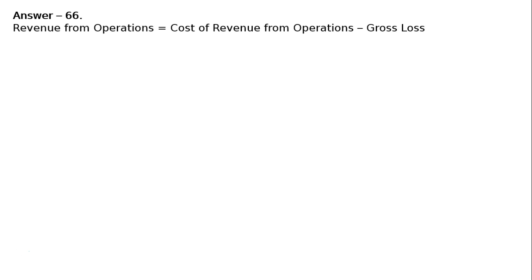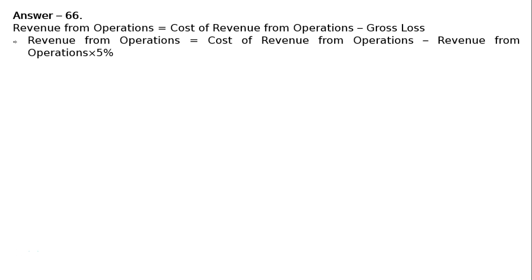Revenue from operations is equal to cost of revenue from operations plus gross profit, but here it is a loss, so minus gross loss. From cost, if we deduct loss, we get sales. This implies revenue from operations equals cost of revenue from operations minus gross loss. Since the gross loss ratio is 5%, gross loss is always calculated on revenue from operations, so minus 5% of revenue from operations will be gross loss.